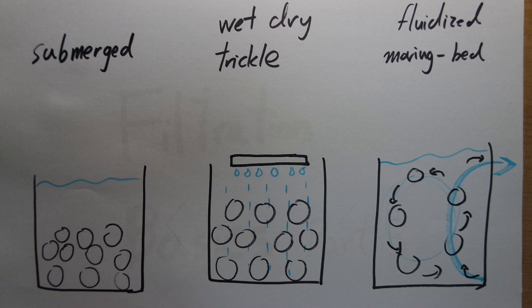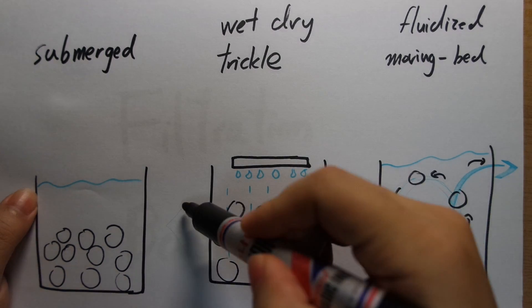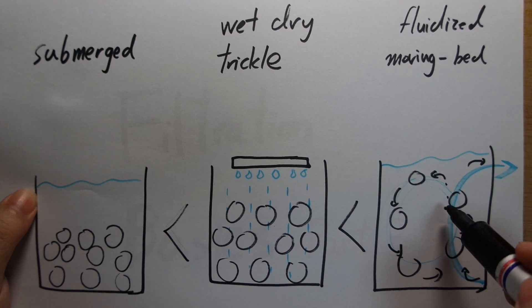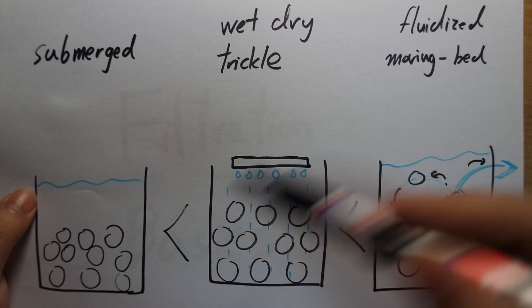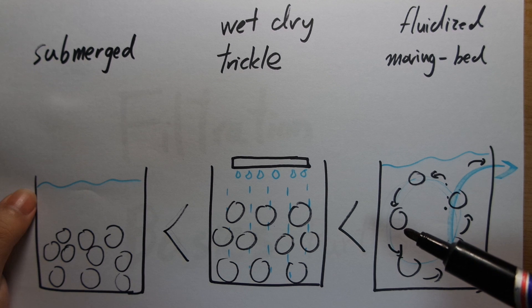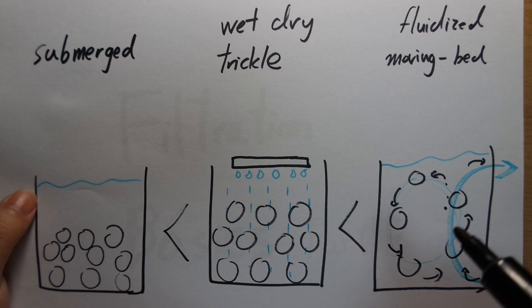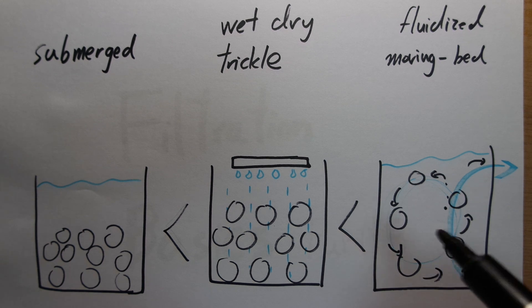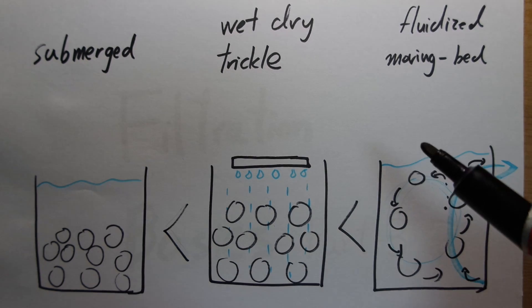These filters have different degrees of efficiency. In terms of efficiency, the moving bed filter has the highest, next is wet/dry, and next is submerged. There are other videos discussing this, but people don't really understand why. In this video I'll explain why fluidized bed and wet/dry filters are known to be more efficient than submerged type filters.